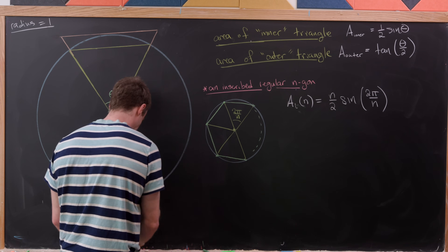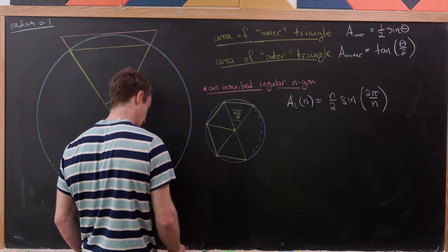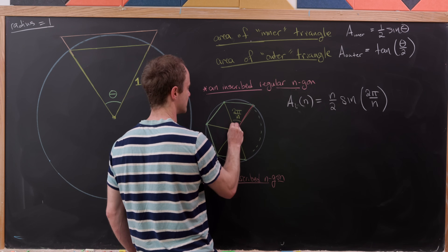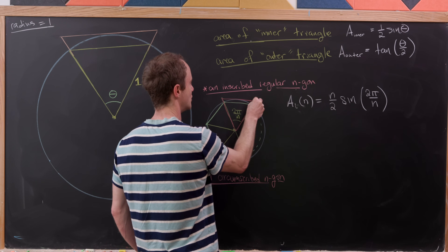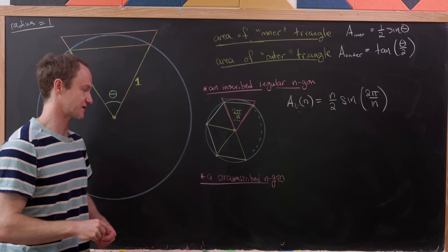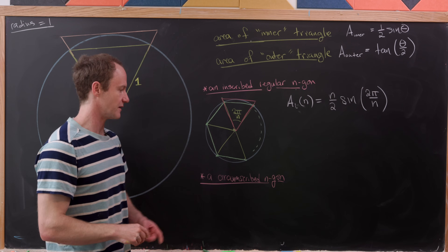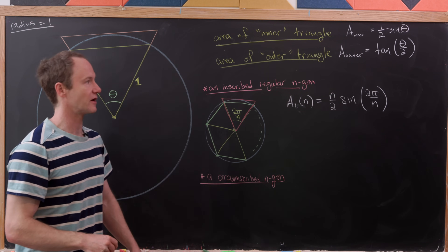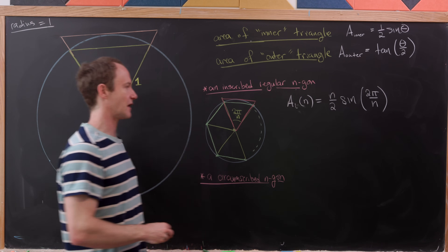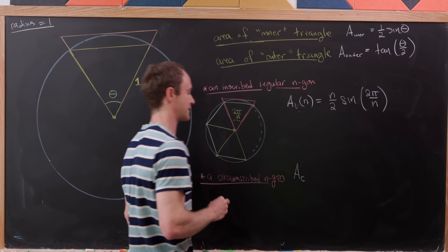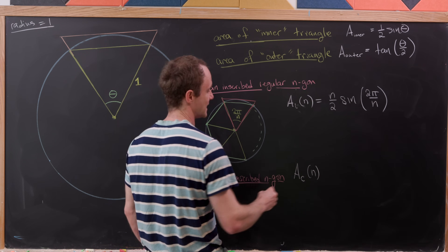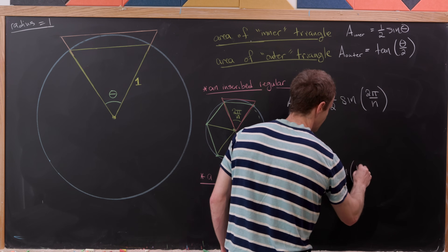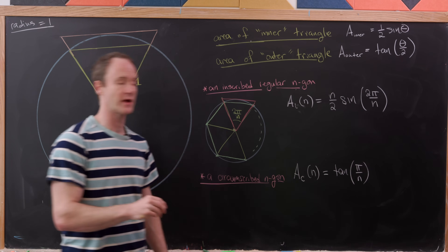For the circumscribed n-gon, we build each of those triangles out into slightly bigger triangles whose top edge is tangent to the circle. The area of a circumscribed n-gon Ac(n) is n times the area of one of those outer triangles, which gives us n times the tangent of π over n.